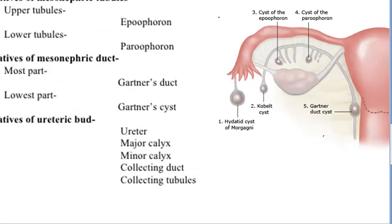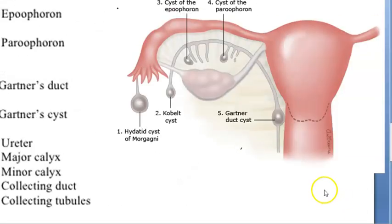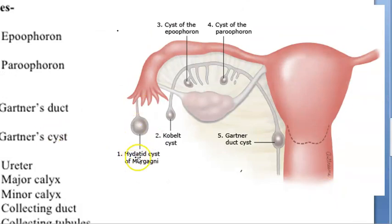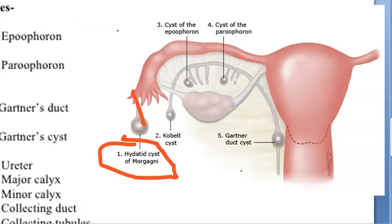There are two extra terminologies shown here as well. There are two other terminologies: hydatid cyst of Morgagni, and cobalt cyst. The hydatid cyst of Morgagni is pedunculated. The cobalt cyst — they are saying the Gartner duct may be cystic, and the outer ones are cobalt tubules.